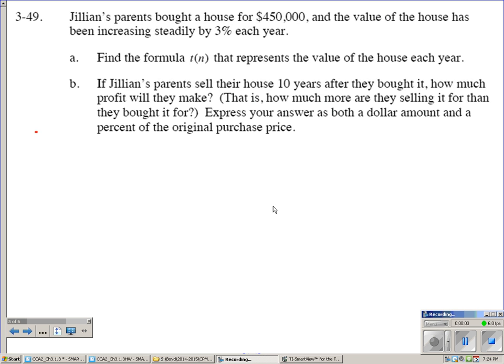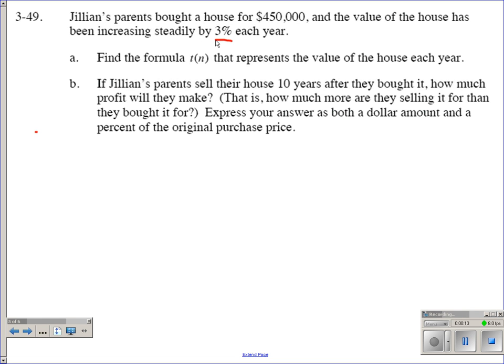All right, problem 3-49. Jillian's parents bought a house for $450,000, and the value of the house has been increasing steadily at 3% each year. Part A, find the formula T(n) that represents the value of the house each year.